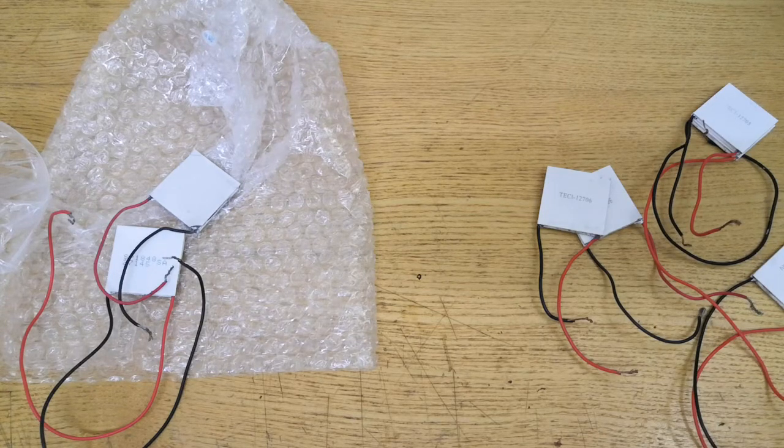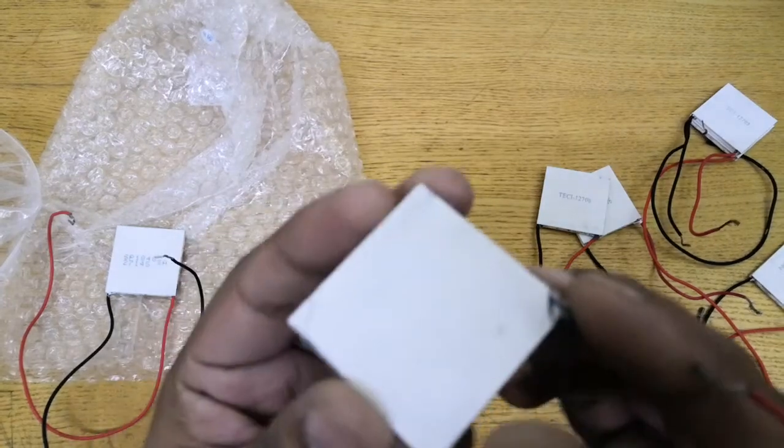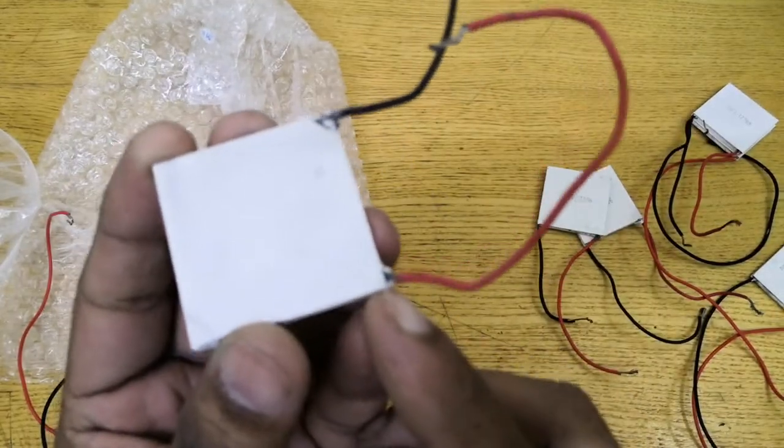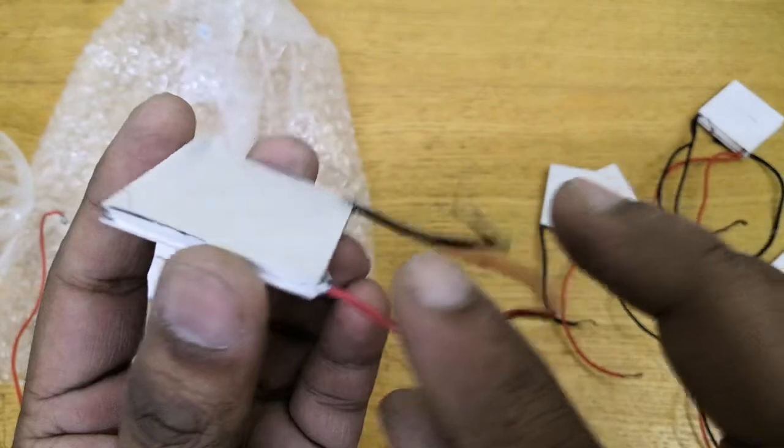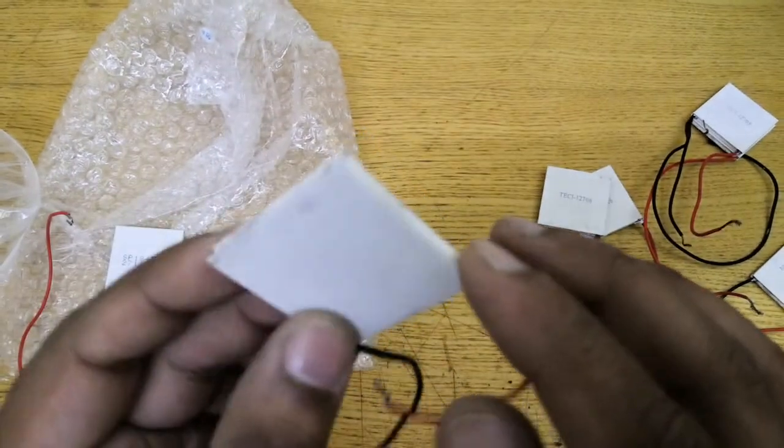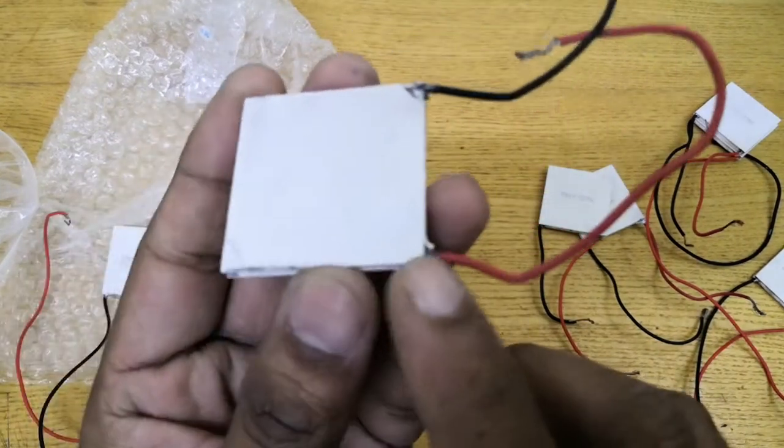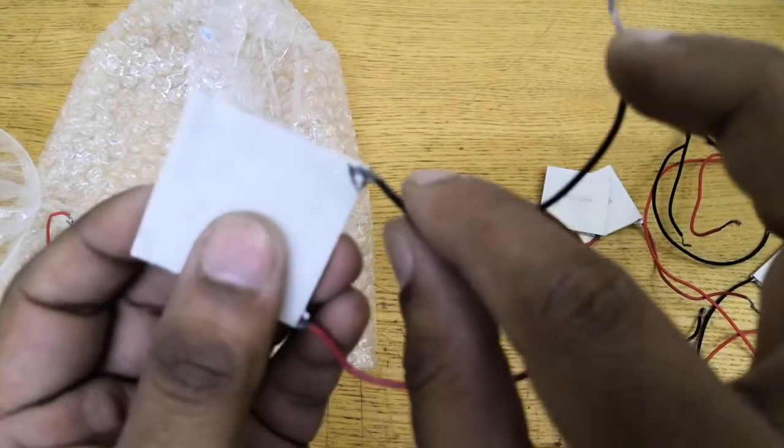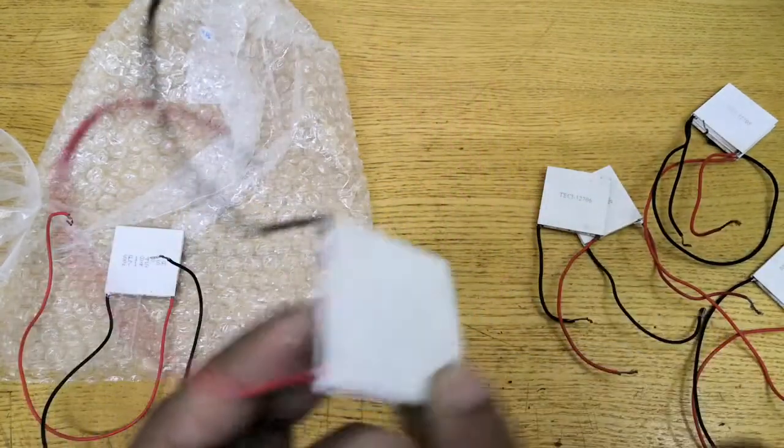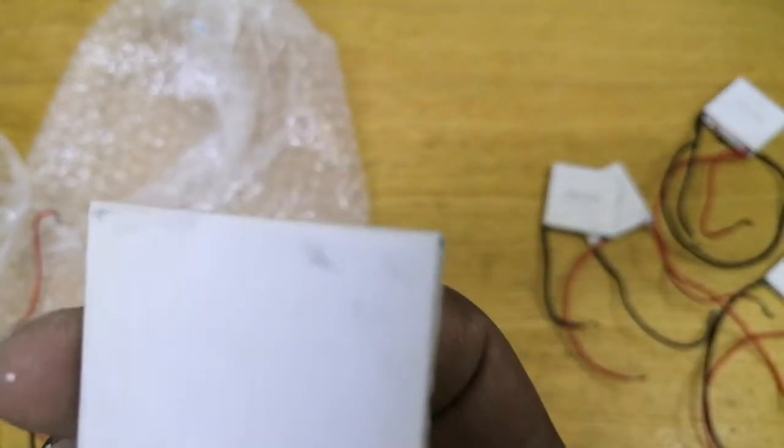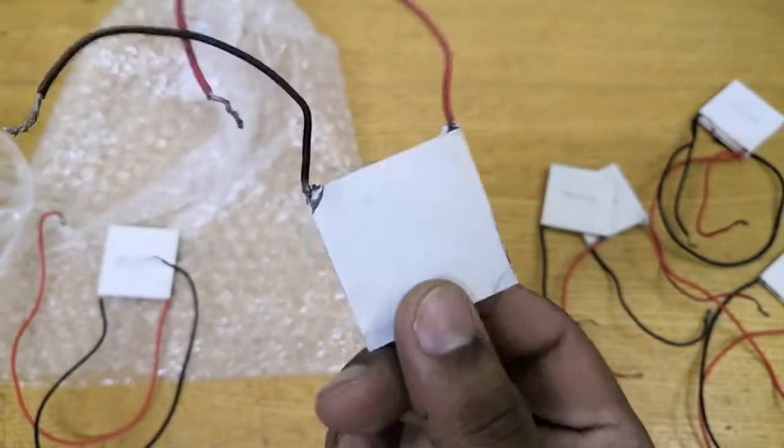The question is, how durable are these Peltiers? The corners where the wires are soldered are really fragile. If you're not handling it very sensitively, it's going to break. The edges of the ceramics are really fragile, so once the wire is moved a couple of times, it will break the soldering inside and won't generate any cooling or heating effect.